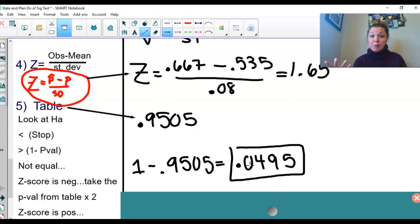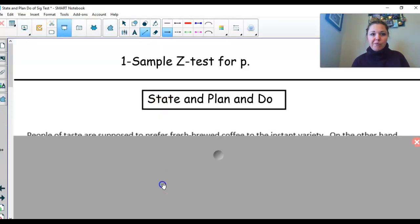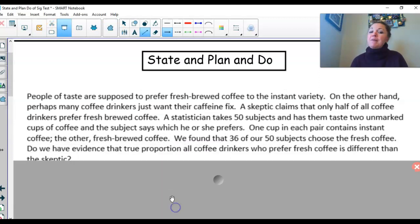What I want to do is I want to do one more problem that's a not equal to. So you're used to these steps right here. People of taste are supposed to prefer fresh brewed coffee to the instant variety. On the other hand, perhaps many coffee drinkers just want their caffeine fix. A skeptic claims that only half of all coffee drinkers prefer fresh brewed coffee. A statistician takes 50 subjects and have them taste two unmarked cups of coffee, and the subject says which he or she prefers. One cup in each pair contains instant coffee, the other fresh brewed. We found that 36 of our 50 subjects chose the fresh coffee. Do we have evidence that the true proportion of all coffee drinkers who prefer fresh coffee is different than the skeptic?